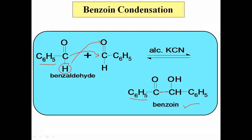To repeat once again: when benzaldehyde is treated with alcoholic KCN, the molecules undergo condensation. One molecule of benzaldehyde adds to the carbonyl group of the second molecule. There is formation of a new compound called benzoin. That compound has two functional groups — one is the carbonyl group and the second is the alcoholic OH group. That compound is called benzoin, and the reaction is called benzoin condensation.